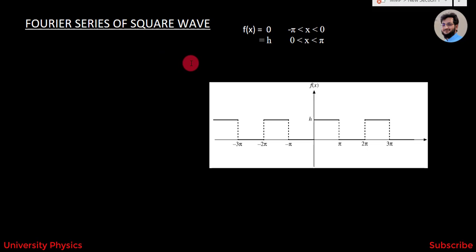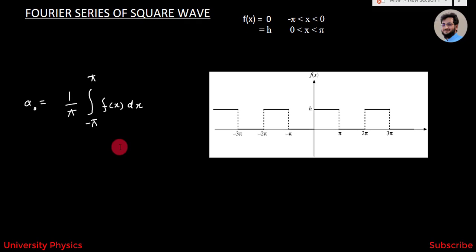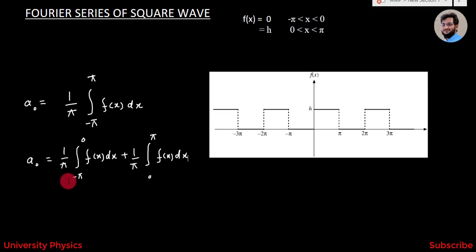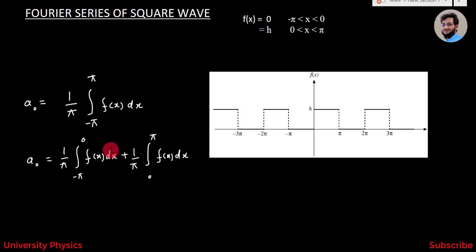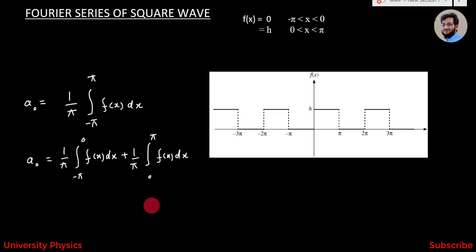First, we will find a0. We know that a0 = (1/π) ∫ from -π to +π f(x) dx. This can be split as a0 = (1/π) ∫ from -π to 0 f(x) dx + (1/π) ∫ from 0 to π f(x) dx. We substitute the values: f(x) = 0 when x is from -π to 0, and f(x) = h when x is from 0 to π.